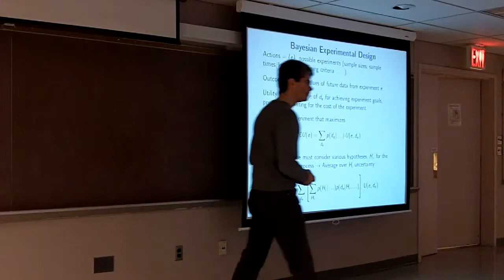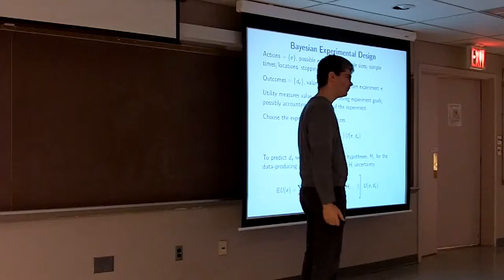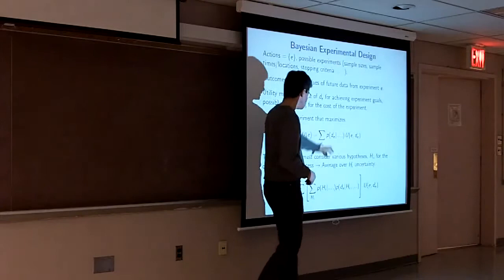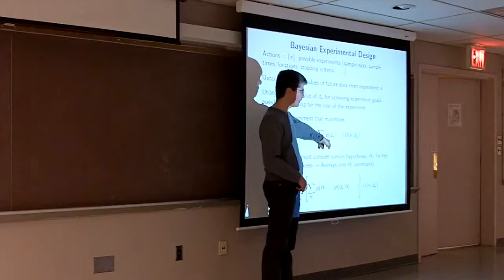Bayesian experimental design is to phrase the choice of experiments as a decision problem in this Bayesian decision theory. So the actions are just, the action space would just be labels for possible experiments, like the choice of a sample size n, or choice of the time to take my next exoplanet RV observation. So I'll label my experiments by some labels. So the outcomes that I'm uncertain about are what nature will hand me in terms of data from that experiment. I don't know what data I'll get. The utility will measure the value of particular data for achieving the goals of an experiment. And it might take into account the cost of an experiment. It might be more costly to observe at certain times than others, more costly to observe during dark time than bright time.